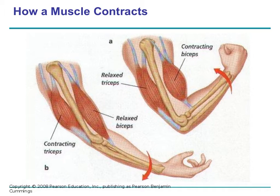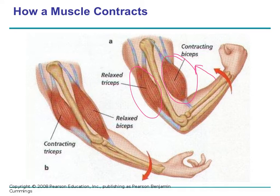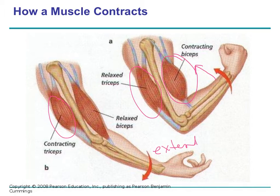Muscles often work in antagonist pairs. For example, here we have our bicep and our tricep at a hinge joint. When the bicep contracts to decrease the angle of the joint, the tricep has to relax. When you extend your arm, the tricep contracts and the bicep relaxes. Muscles shorten — that's the only thing they know how to do.